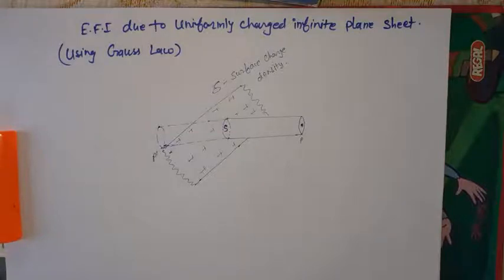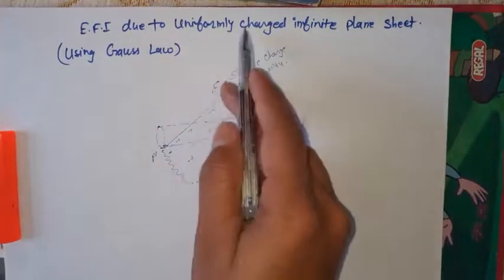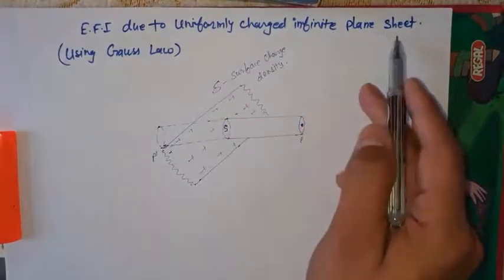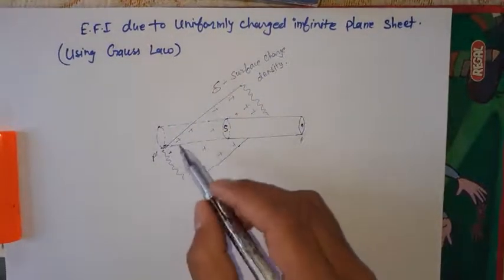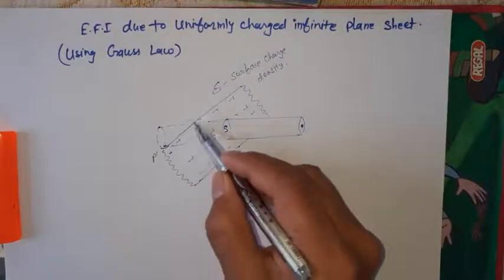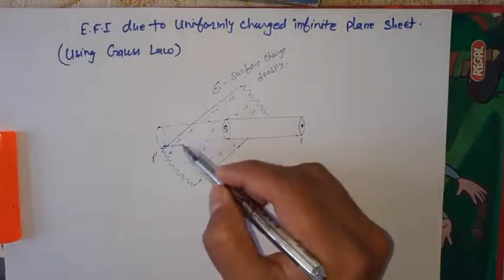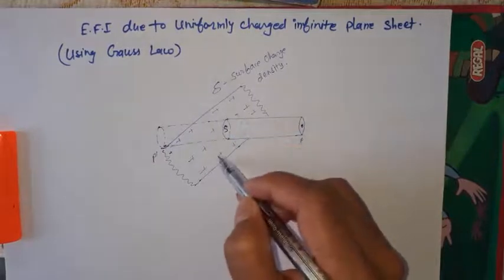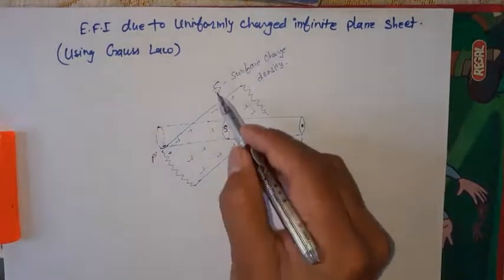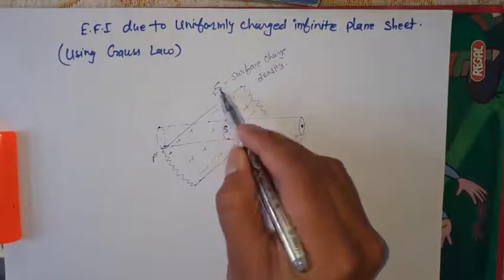Hello, welcome back to this physics lecture. Today we are going to learn about electrical intensity due to a uniformly charged infinite plane sheet by using Gauss's law — an important application of Gauss's law. For this, we suppose that here we have a plane sheet, and on it there is a uniformly distributed positive charge. Its surface charge density is given as Sigma.